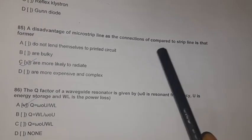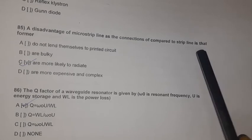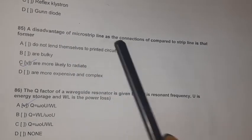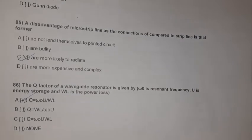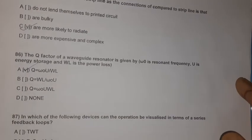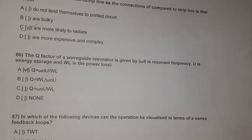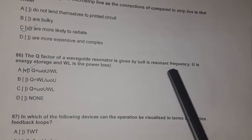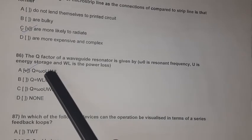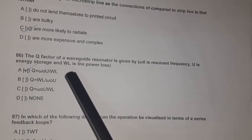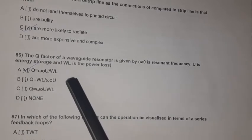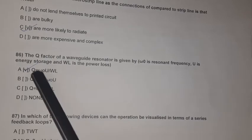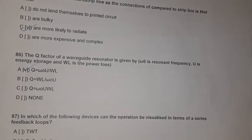Question 83: A disadvantage of microstrip line compared to strip line is that the former is more likely to radiate. Question 84: The Q factor of a waveguide resonator is given by Q = ωU/W_L, where ω₀ is the resonant frequency, U is the energy stored, and W_L is the power loss.